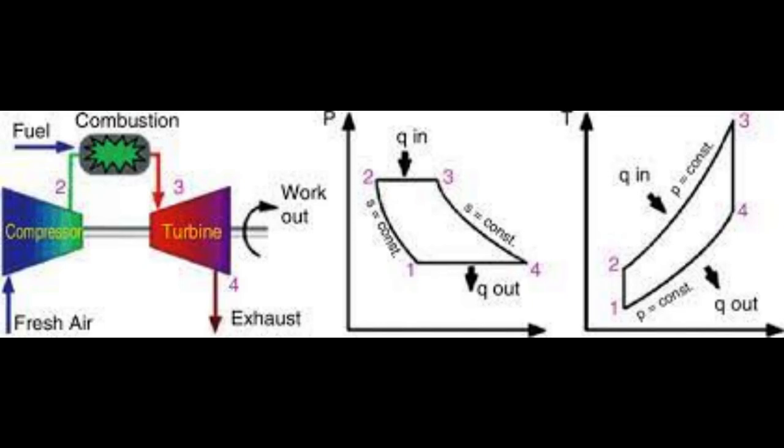The Brayton cycle depicts the air standard model of a gas turbine power cycle. The four steps of the cycle are: Stage 1 to 2, isentropic compression; Stage 2 to 3, reversible constant pressure heat addition; Stage 3 to 4, isentropic expansion; Stage 4 to 1, reversible constant pressure heat rejection.